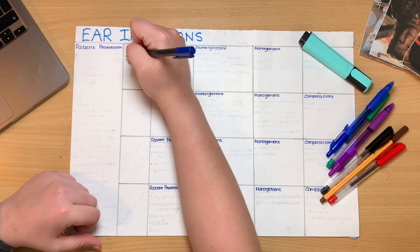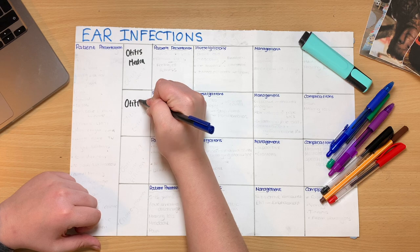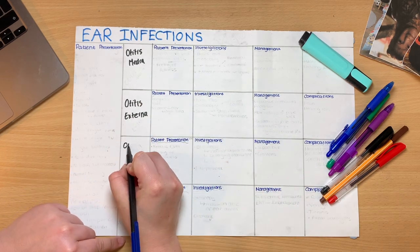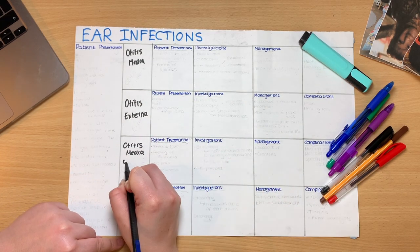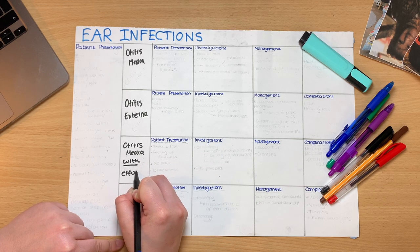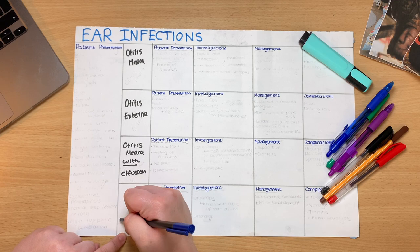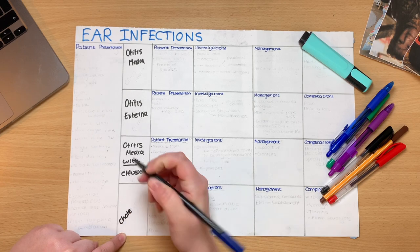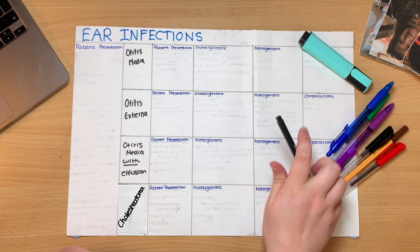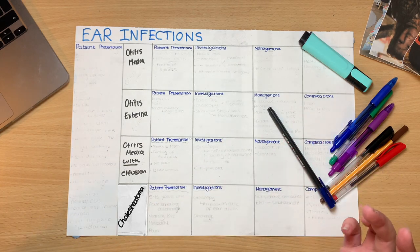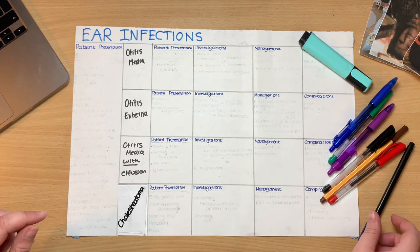We have otitis media, otitis externa, otitis media with effusion, and finally a cholesteatoma. So while you're waiting, you decide to note down what you could be looking for in each differential.